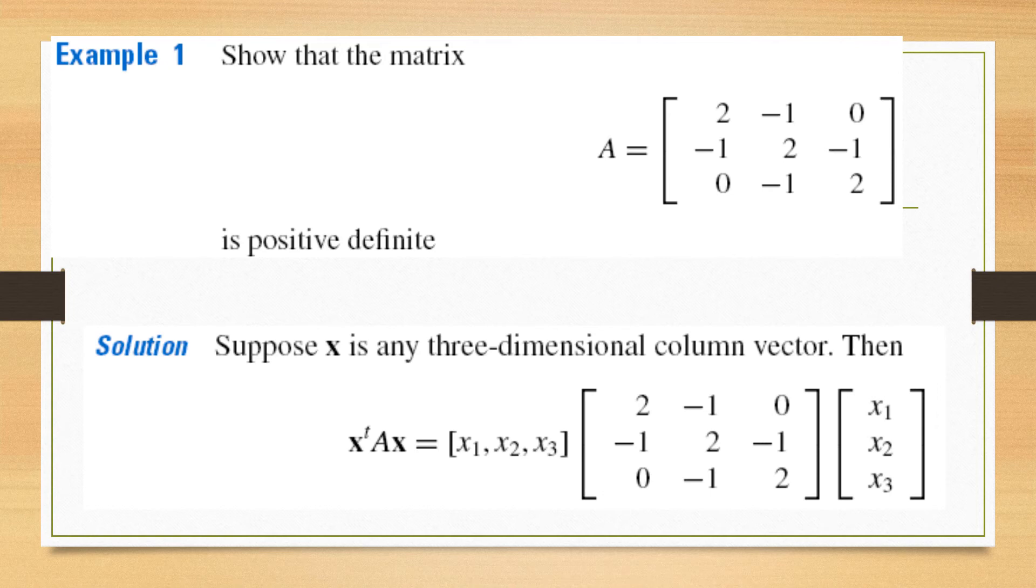We consider this expression X transpose AX. X is a vector of dimension 3. Its dimension depends on the dimension of the matrix A. And this is the transpose of the vector X.